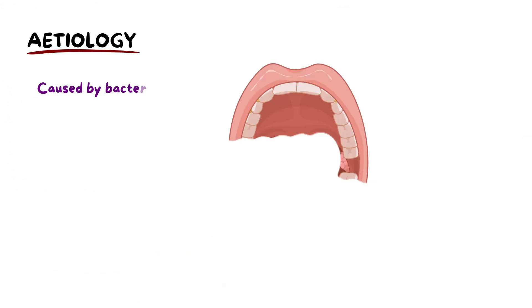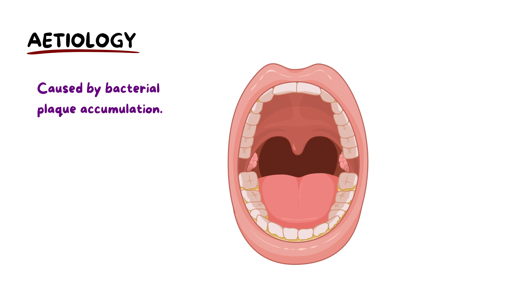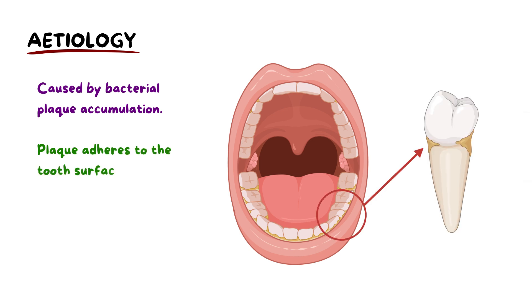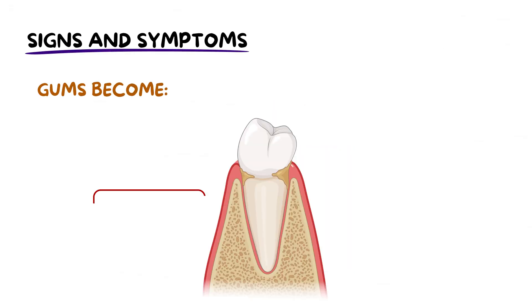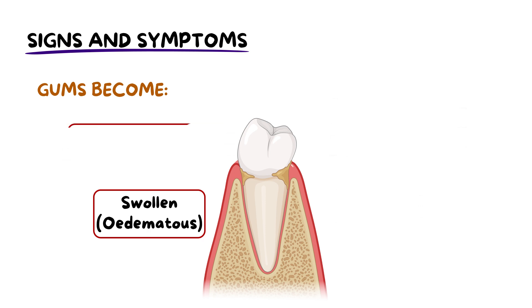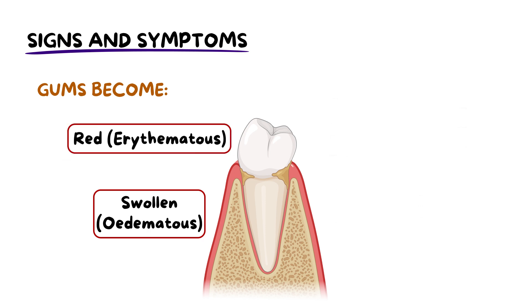The primary cause of gingivitis is the accumulation of bacterial plaque on the teeth. This plaque, or biofilm, is a mix of bacteria, food debris, and saliva which adheres to the tooth surface. When it accumulates, it triggers an immune response in the body, leading to inflammation of the gum tissues. As a result, the gums become swollen or edematous and red or erythematous.